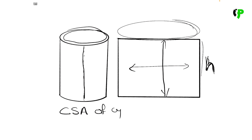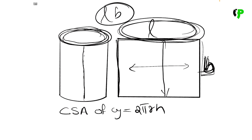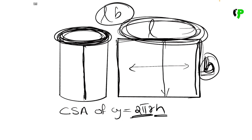CSA of cylinder is equal to — the perimeter formula — the formula is 2πr. This is h, because height also comes in. What does this mean? The area of the rectangle is L × B. L × B is the same area. If we look at the area, L is a circle — we have a circle at the top. The area uses the height. So if we look at the area, we have 2πr and height h.